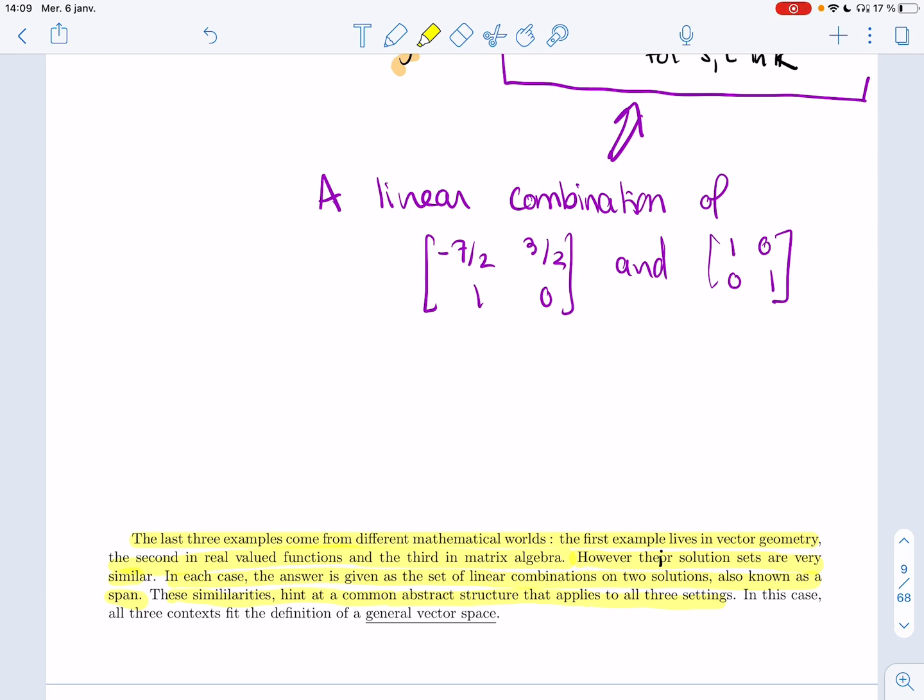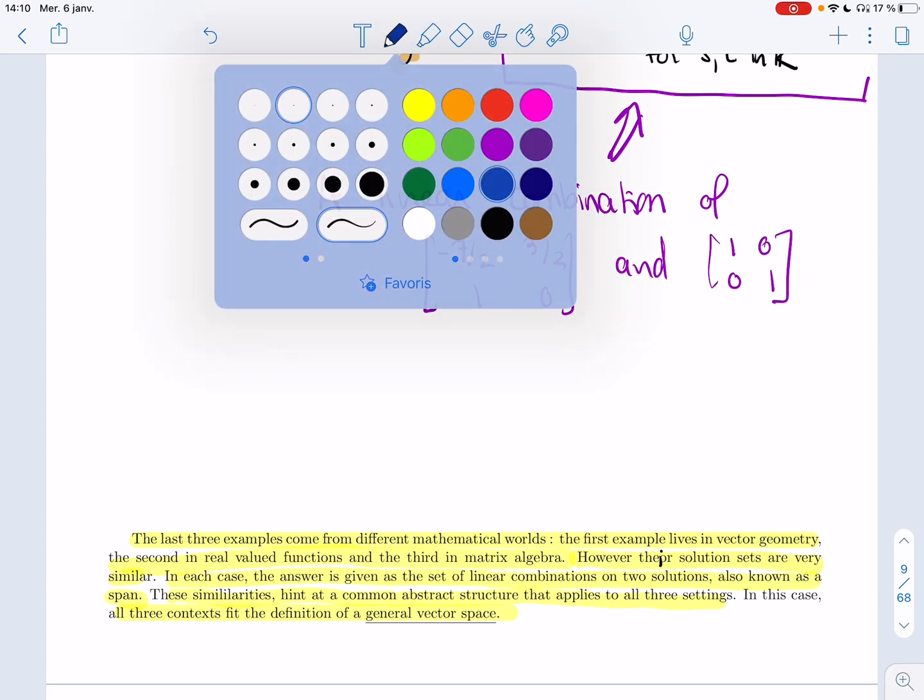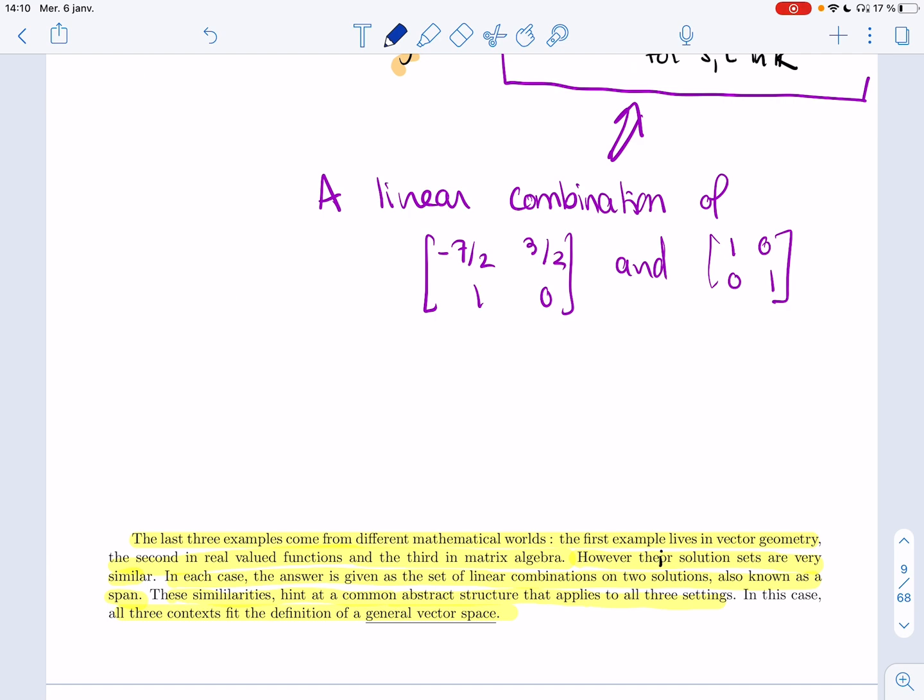These similarities hint at a common abstract structure that should apply to all three settings. In this case, all three contexts - vector geometry, real valued functions, and matrix algebra - they all fit the definition of a general vector space. That's why we end up with linear combinations and with the span, because there's a bigger structure that applies to all three, where we could prove that certain types of problems lead to spans.